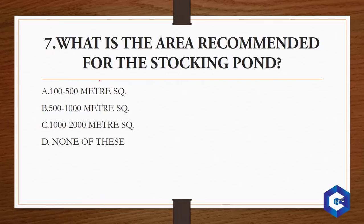What is the area recommended for the stocking pond? There are three types of ponds: nursery pond, rearing pond, and stocking pond. For the stocking pond, the recommended area is 1000 to 3000 square meters — option C. If it is 100 to 500 square meters it is a nursery pond; if it is 500 to 1000 square meters it is a rearing pond. Remember these two as well.